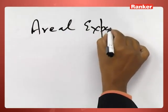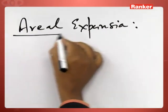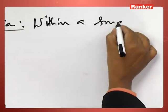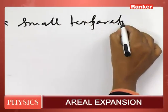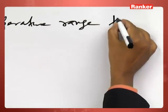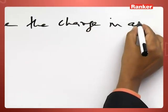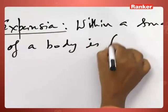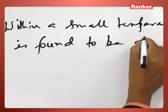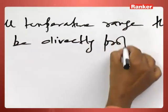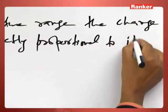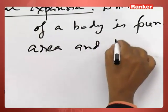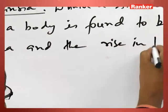Areal Expansion. Within a small temperature range, the change in area, that is the surface area of a body, is found to be directly proportional to its initial area and the rise in temperature.